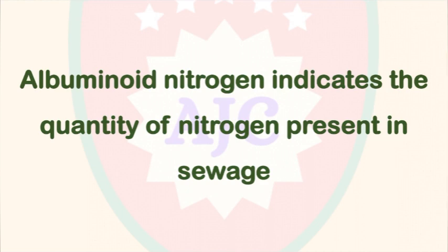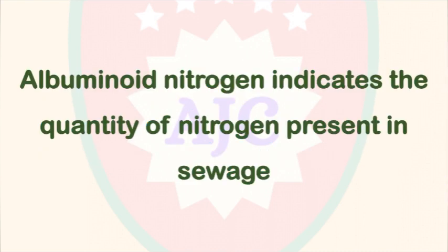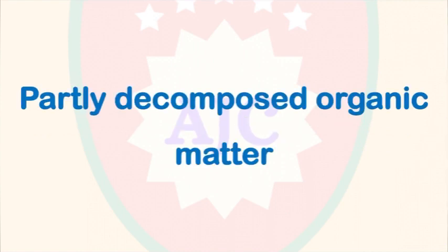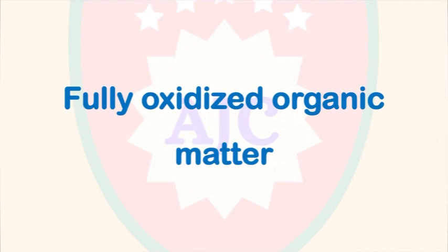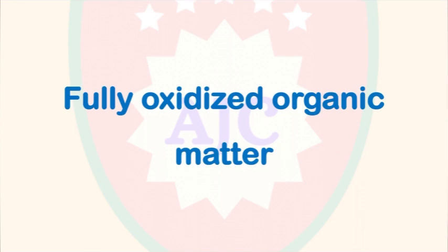Albuminoid nitrogen indicates the quantity of nitrogen present in sewage. The organic matter decomposes to produce free ammonia first, then albuminoid nitrogen, and finally nitrates when fully oxidized — these are the four forms of nitrogen in sewage. This class covers the full subject of pollution control board with one-line questions.